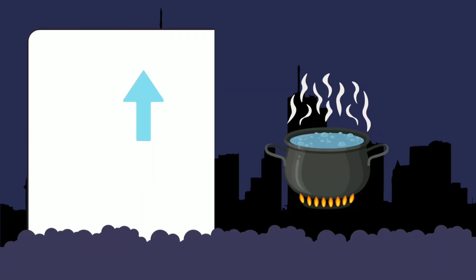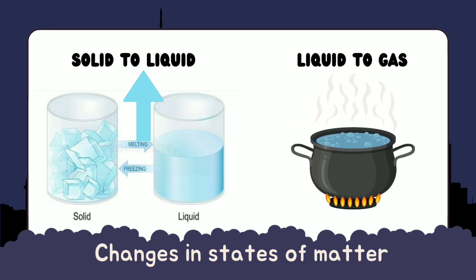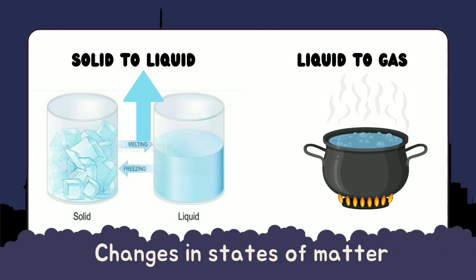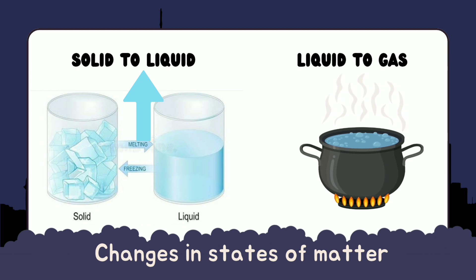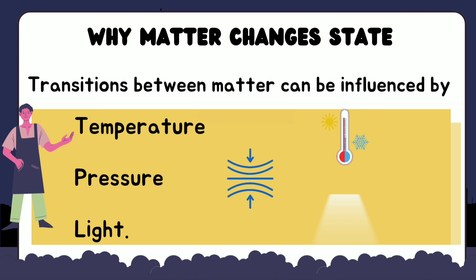Think of an ice cube in your drink on a hot summer day as it melts from a solid to a liquid — it's undergoing a change in its state of matter. Or a pot of boiling water: the water molecules go from being still and organized in a liquid state to bouncing around energetically in a gas state. Each state of matter has its own unique properties, and the transitions between them can be influenced by various factors such as temperature, pressure, and even light. Understanding these changes and the underlying science behind them can give us a deeper appreciation for the constantly changing world around us.